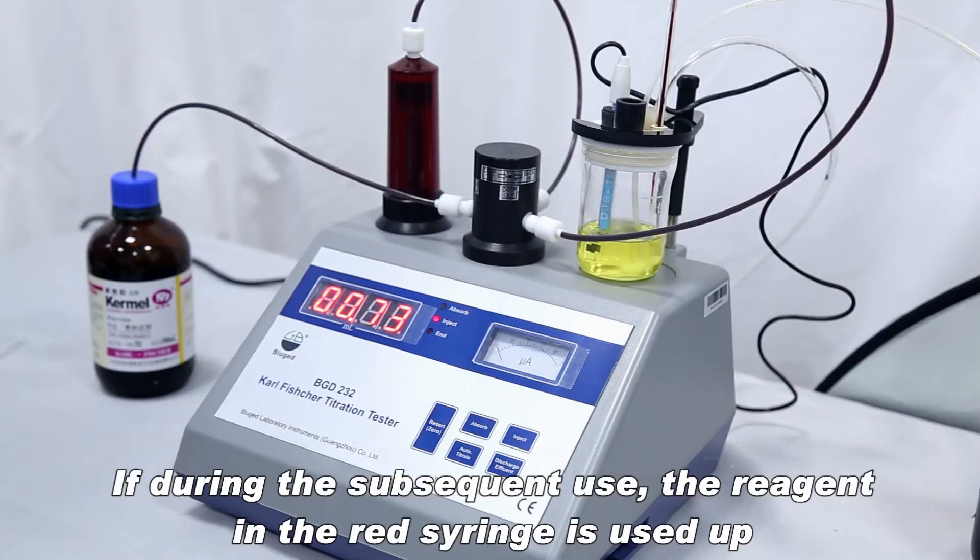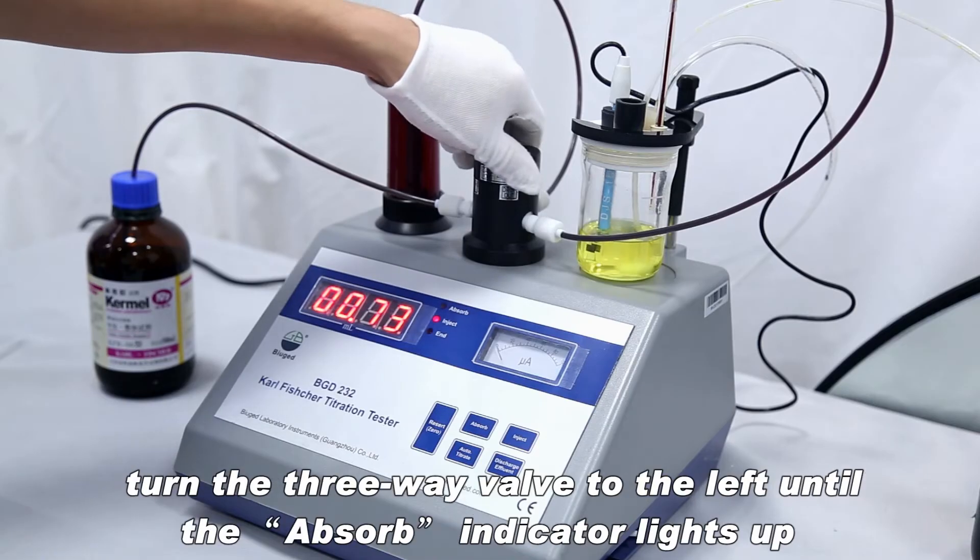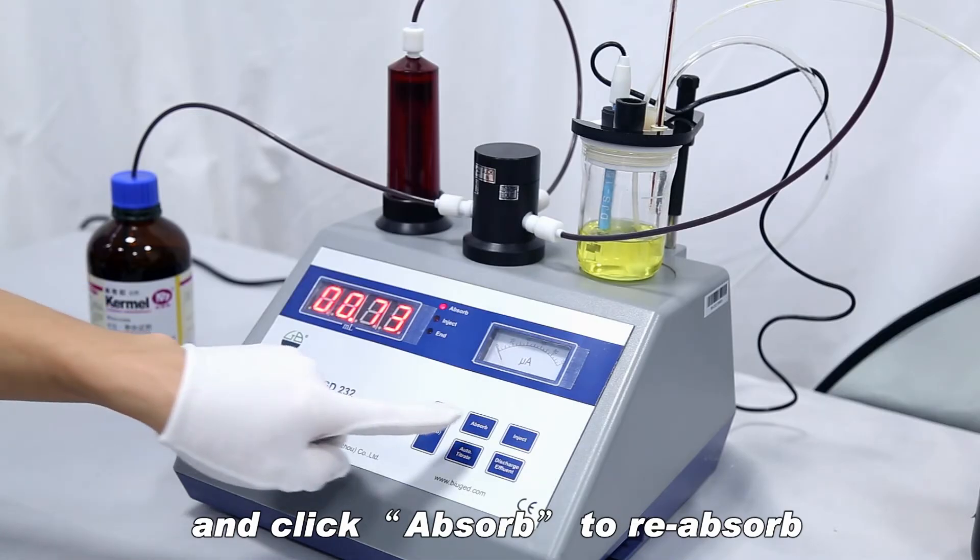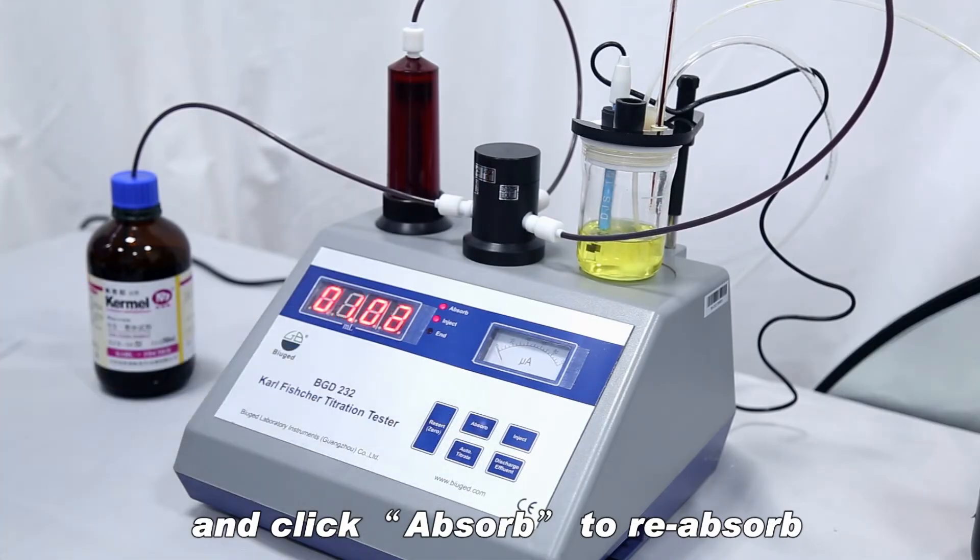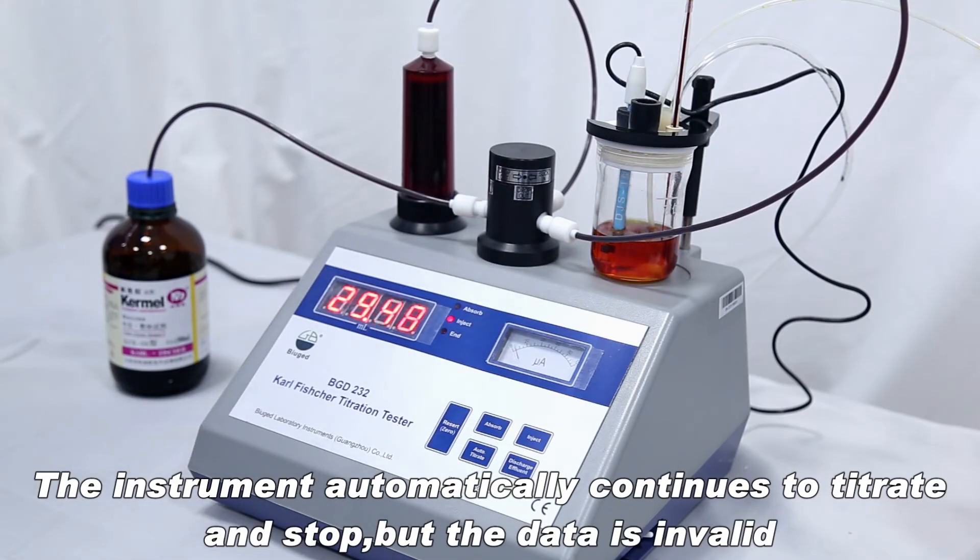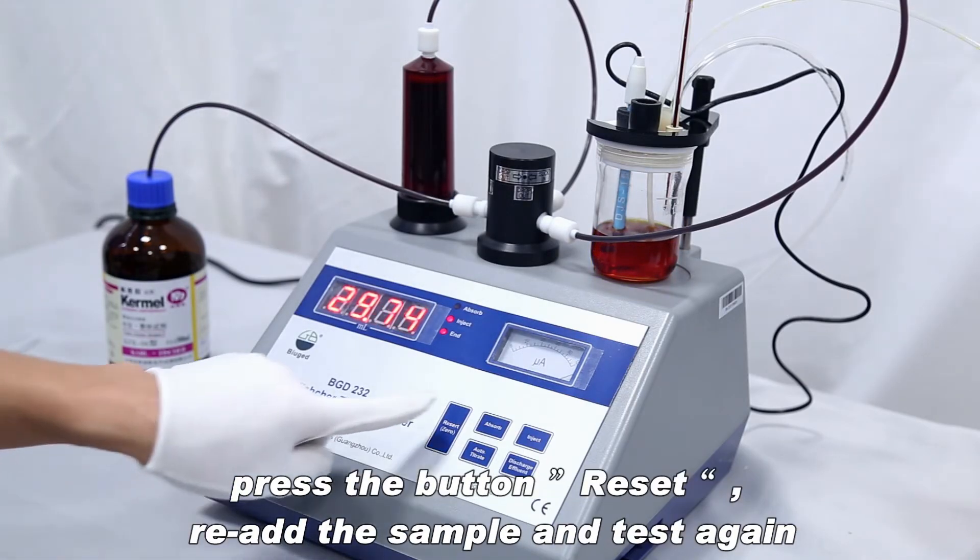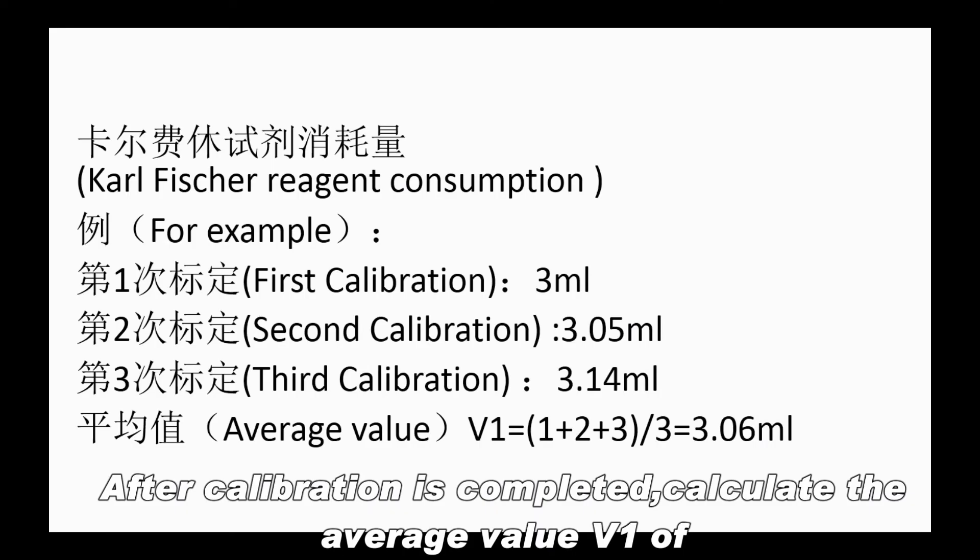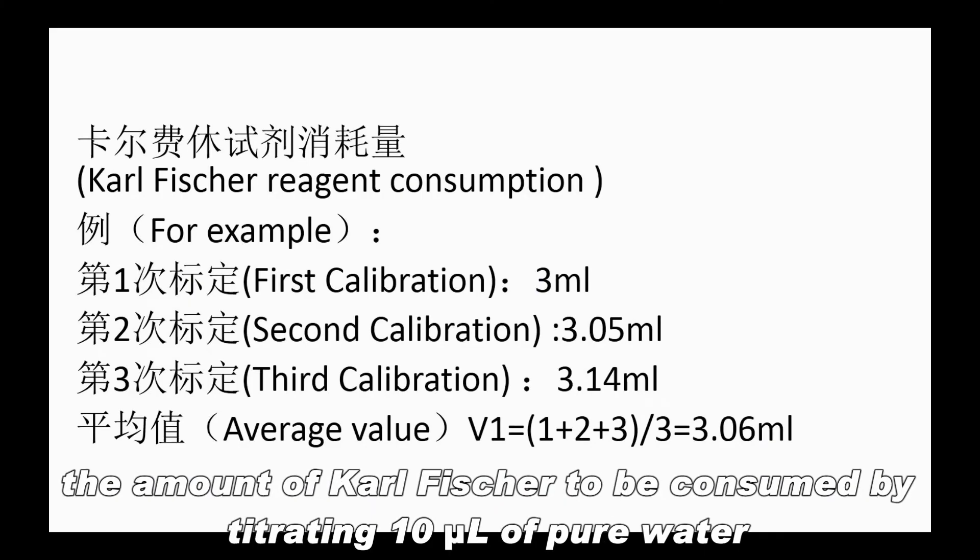If during subsequent use the reagent in the red syringe is used up, turn the 3-way valve to the left until the absorb indicator lights up and click absorb to reabsorb. Then rotate the 3-way valve to the right after filling. The instrument automatically continues to titrate and stop, but the data is invalid. Press the button reset, re-add the sample and test again. After calibration is completed, calculate the average value to be the amount of Karl Fischer to be consumed by titrating 10µL of pure water.